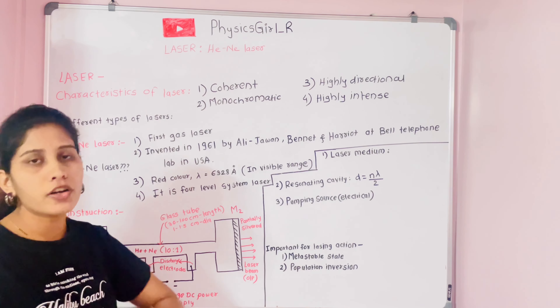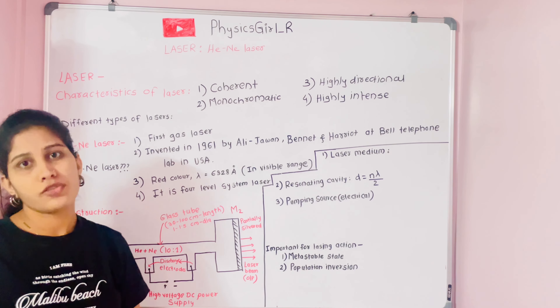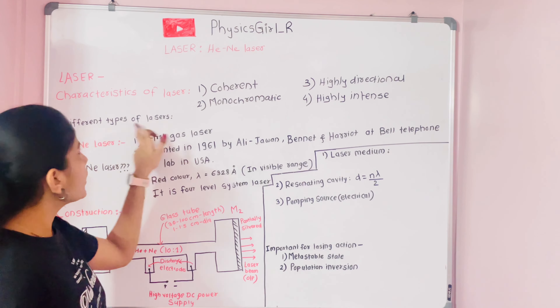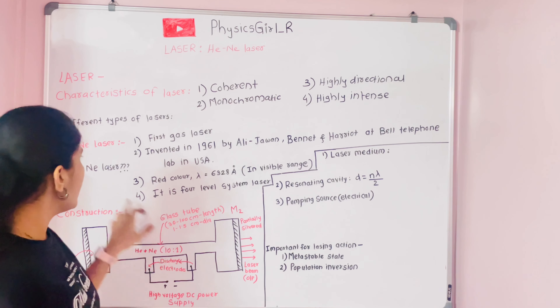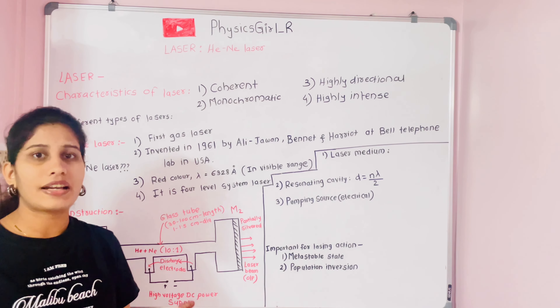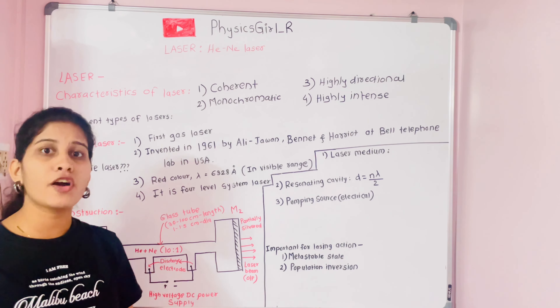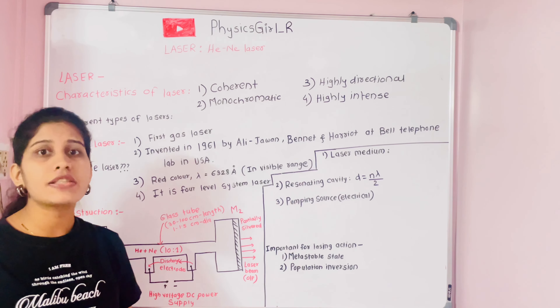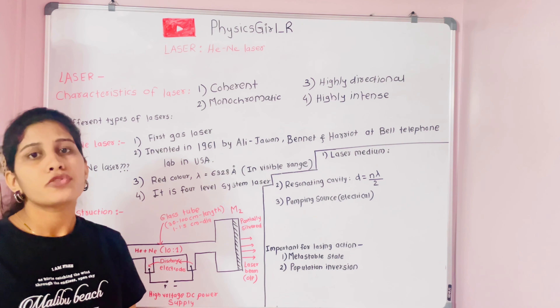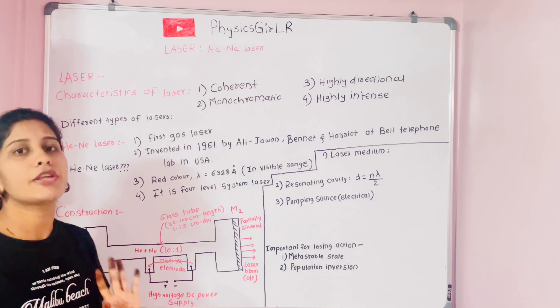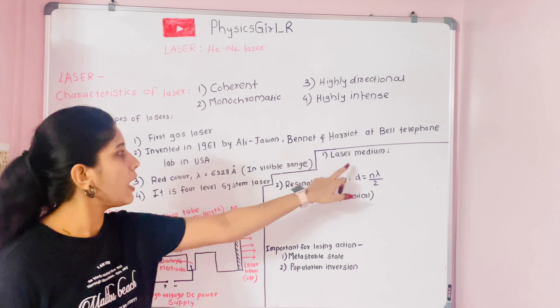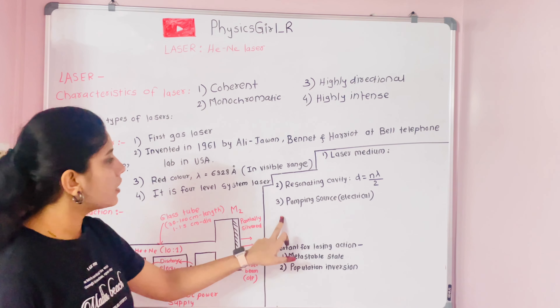This concludes the introductory part covering laser characteristics, how laser is distinguished from ordinary light, and the different types of lasers. Within those types, we have introduced the helium-neon laser, which is a gaseous-type laser, and we have also seen why it is preferred over the ruby laser as a solid-state laser.